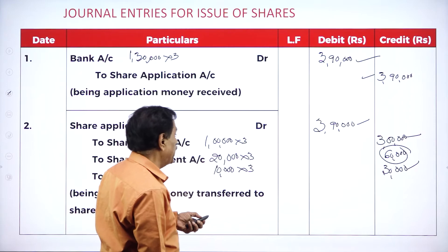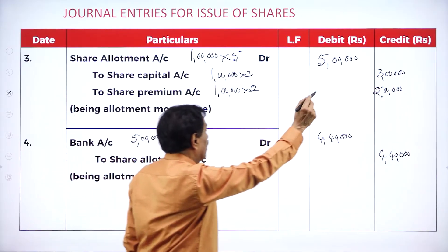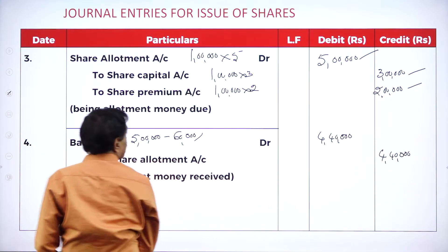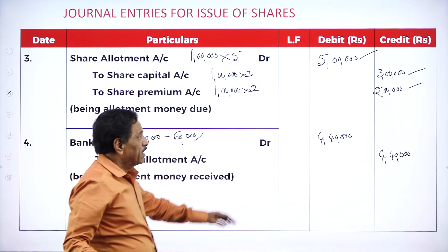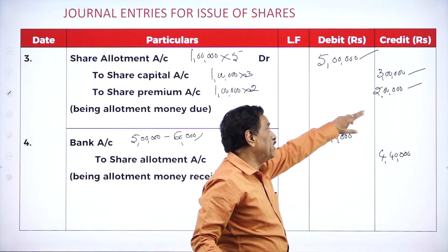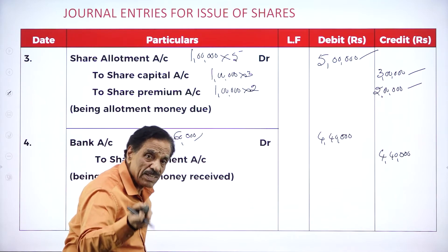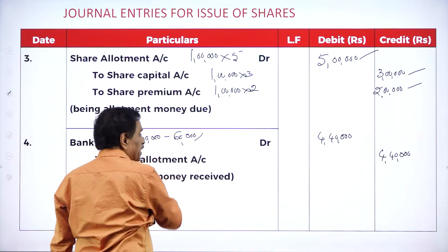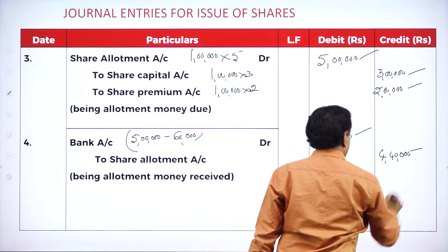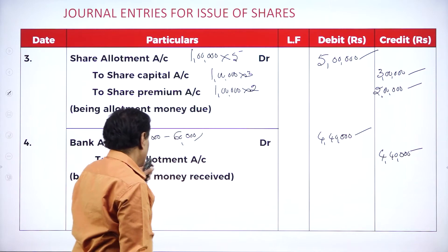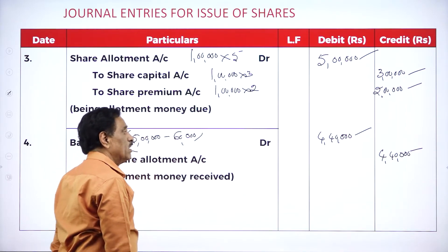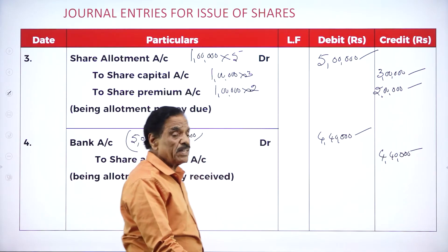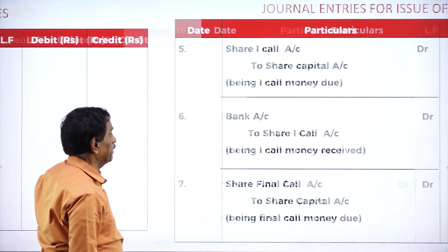Due entry for allotment: share allotment account debit 5 lakh — to share capital 3 lakh, to share premium 2 lakh. We have to receive 5 lakh; real money 3, premium 2. Already received from application: 60,000. Balance to receive: 4,40,000. Entry: bank account debit to share allotment account — 4,40,000.